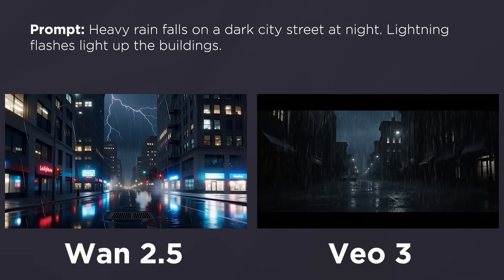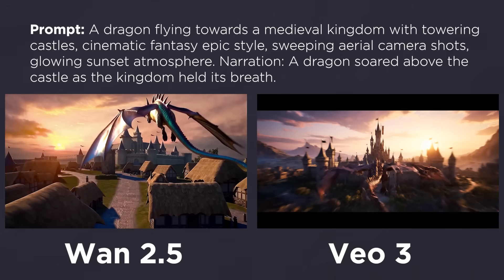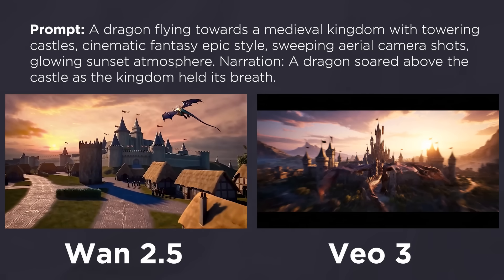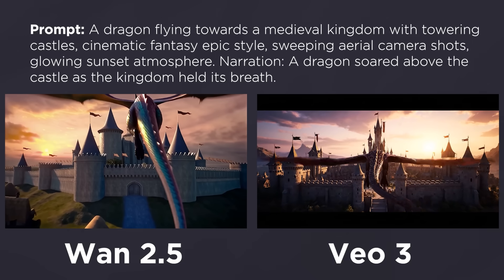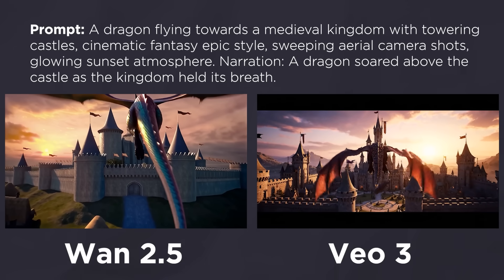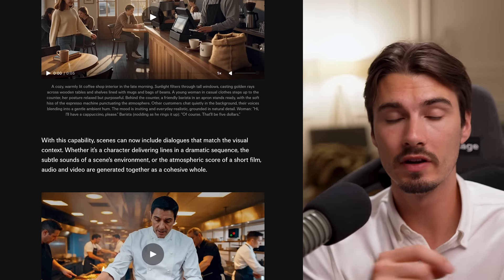The ambient sound is just a bit better in Wan. None of them are perfect. And then a dragon flying towards a medieval kingdom: 'A dragon soared above the castle as the kingdom held its breath' — that's epic, and even the video is better. From what I've seen across Twitter and in their blog post, this video model is very good but not quite as good as VO3, though the audio — especially voices — seems cleaner. It's just good to see more competition in the market. If you need a video model that also does audio, Wan 2.5 is something you should definitely consider.